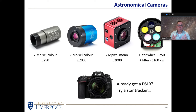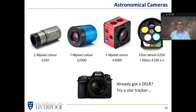A star tracker is literally just a box with some mechanism inside it — sometimes a motor, sometimes clockwork — that simply moves the camera at the right rate. As the Earth rotates once in 23 hours 56 minutes, if you've got a box that rotates the camera in the opposite direction once every 23 hours 56 minutes, and you get the axis of rotation lined up with the Earth's axis, then the camera will effectively track the stars. That's all a star tracker is — effectively a motor in a box.